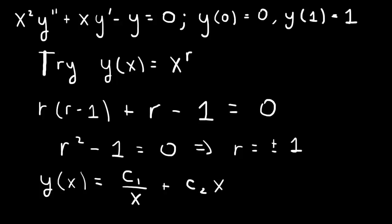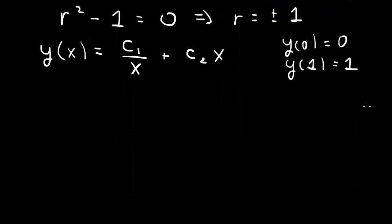And now we need the boundary conditions: y of 0 equals 0 and y of 1 equals 1. So y of 0 equals 0. This term is 0, but this term you have division by 0, so that goes to infinity. And that's not pretty. So we need this term not to be there if we're going to satisfy y of 0 equals 0. So y of 0 equals 0 will imply that this term is absent. So c1 is equal to 0.